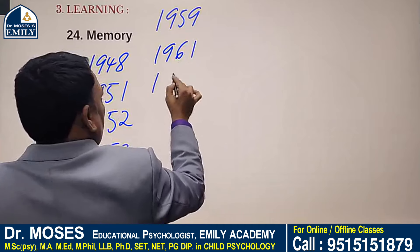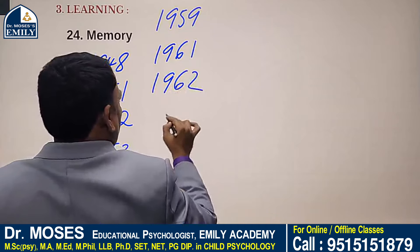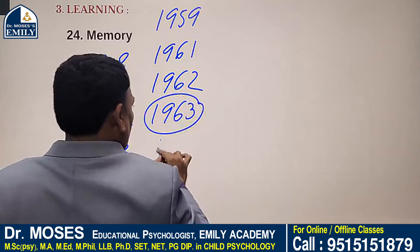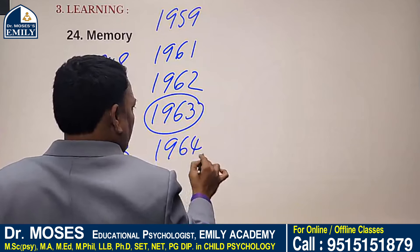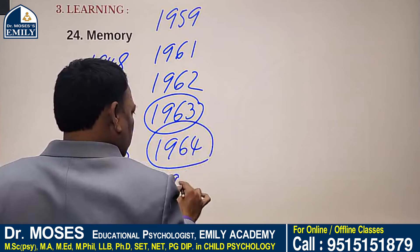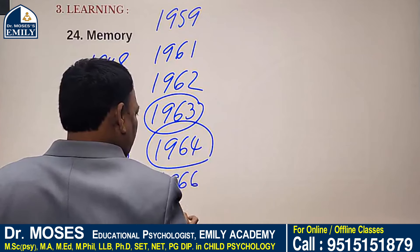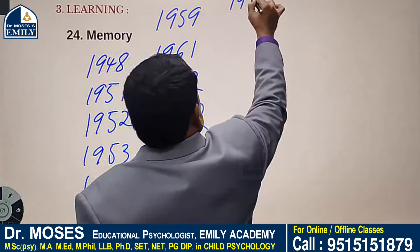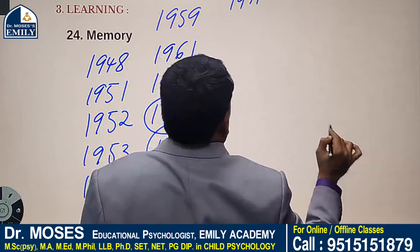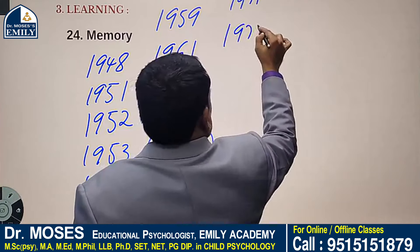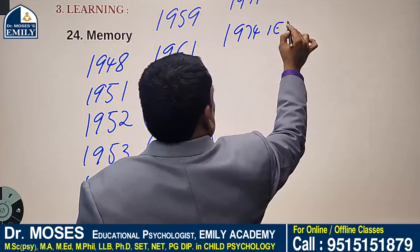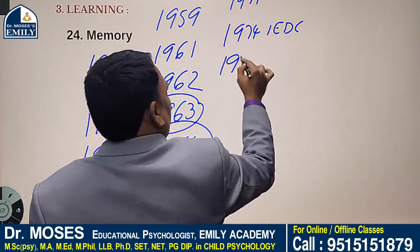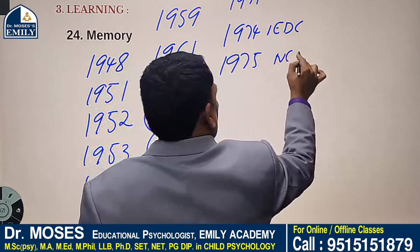1962: Hans Bakhtavatsalam Committee. 1963: Bakhtavatsalam Committee. 1964: Kothari Commission. 1968: the first National Education Policy. 1971: the first residential school in United AP. 1974: Integrated Education for Disabled Children (IEDC) Program. 1975: the first National Curriculum Framework.